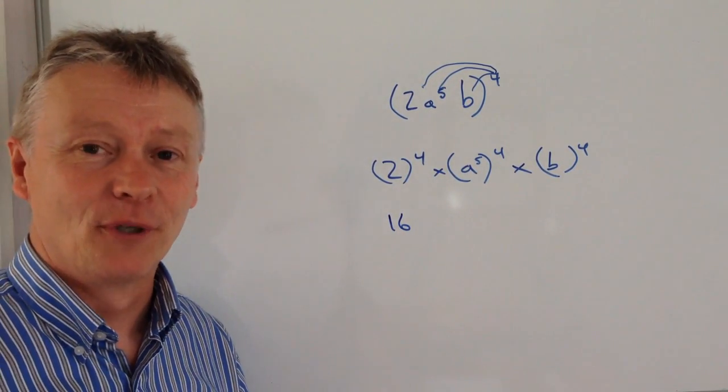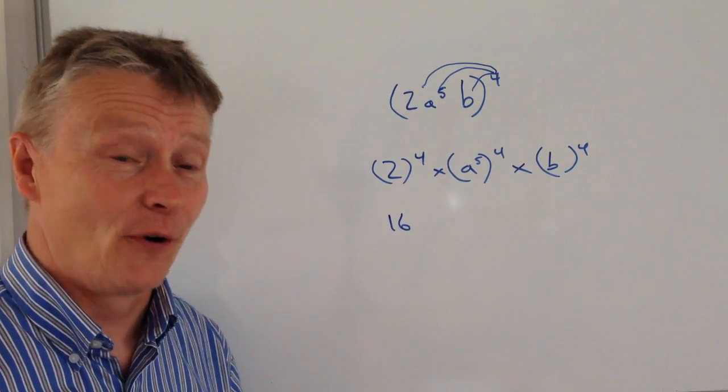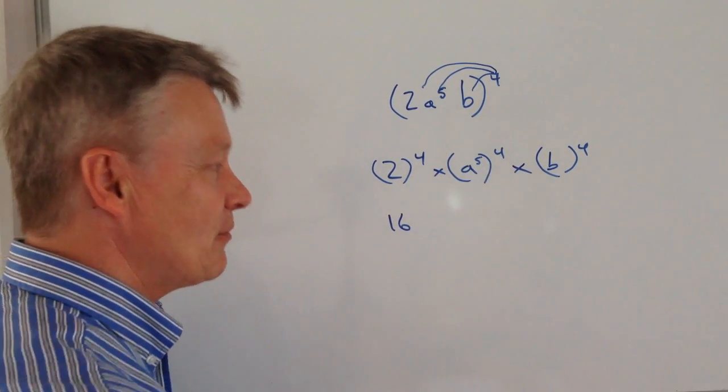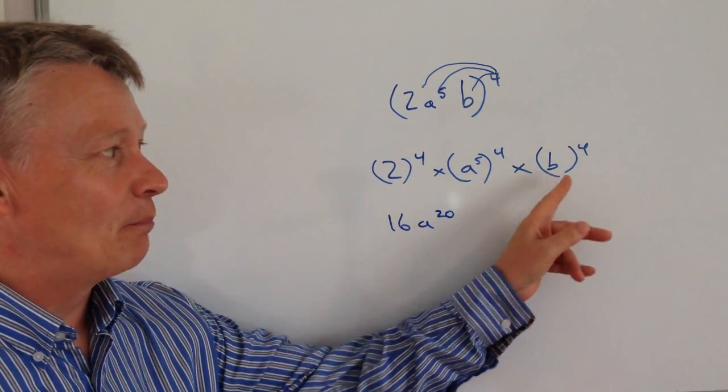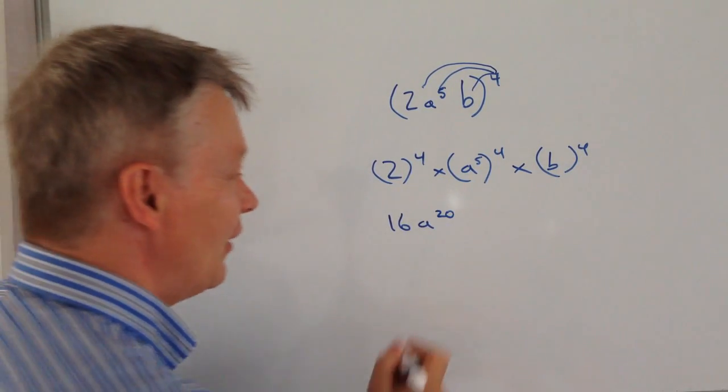And then we've got a to the power of 5, to the power of 4. Well that's 5 times 4, which is a to the power of 20, and then we've got b to the power of 4 at the end here.